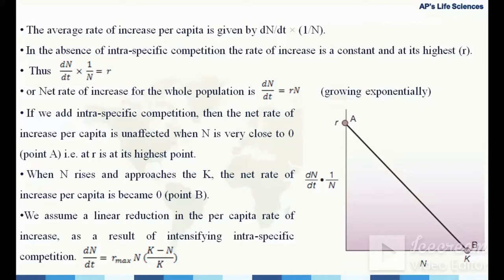When N equals K, the per capita growth rate becomes zero. The logistic growth model assumes a linear reduction in per capita rate of increase due to intraspecific competition. Initially, with no competition, growth rate is at its maximum r, and as N approaches K, dn/dt becomes zero — growth per unit time ceases.